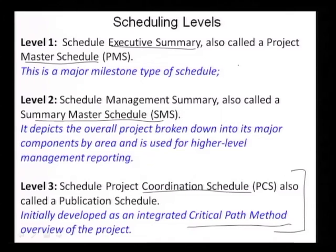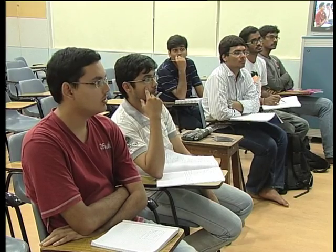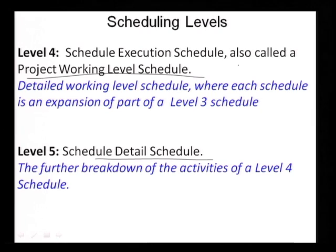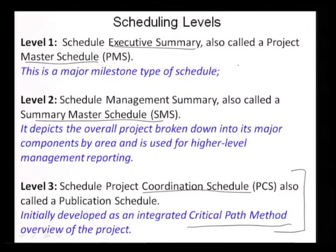Another way to classify these schedules is by how much of a time period you are planning for and how frequently the schedule will change. Level 1 ideally should not change. Level 2 might change if there are major changes. Level 3 has more chance of changing than level 2, depending on major changes in project requirements or unforeseen circumstances. Level 4 and level 5 can change at a monthly level. If you make a level 3 schedule with level 4 detail, you are asking for trouble, because it is going to change so much that just changing the schedule will be your full time job.